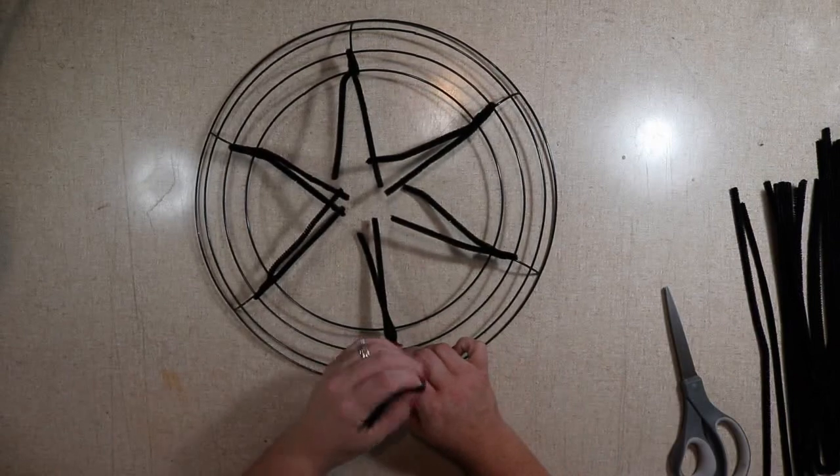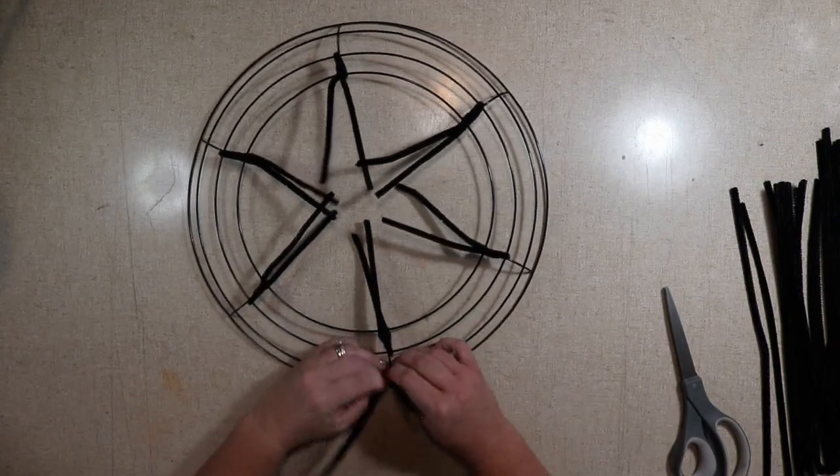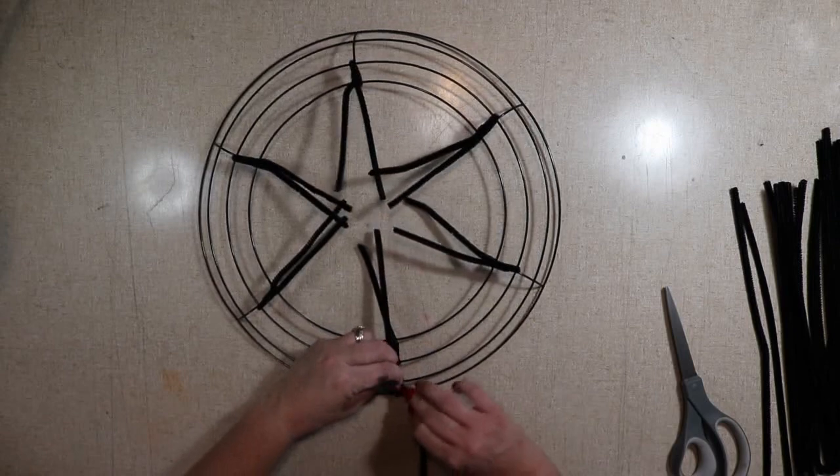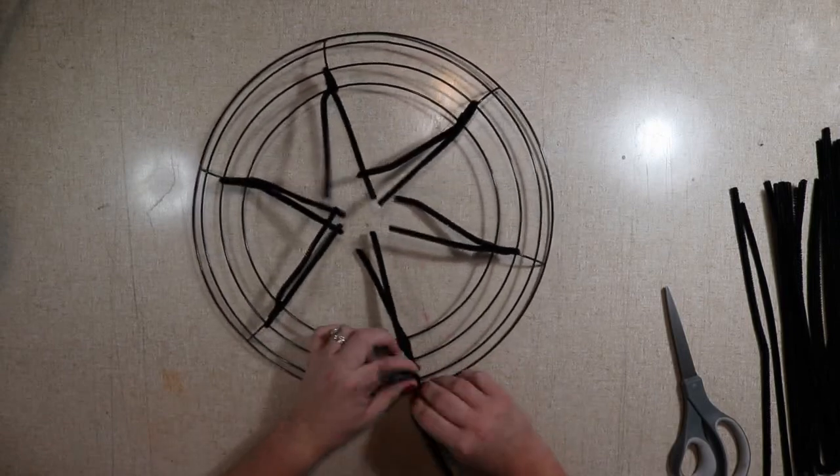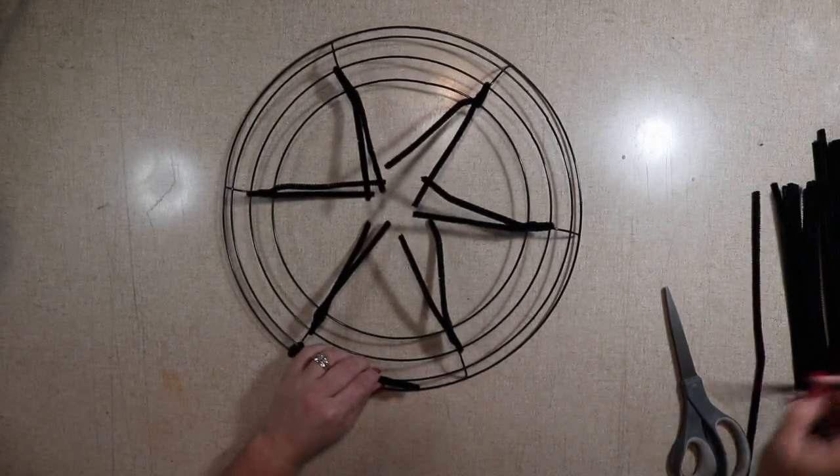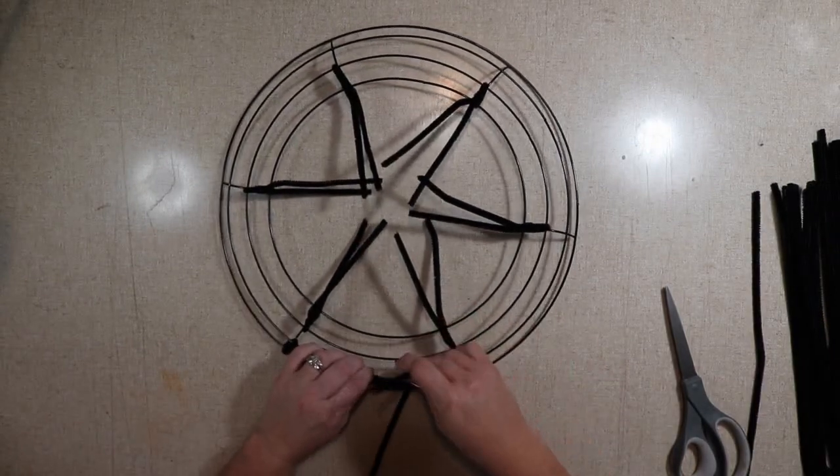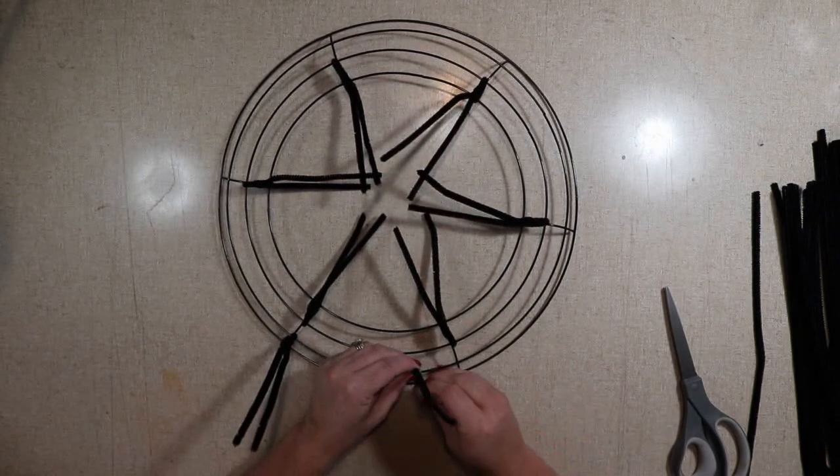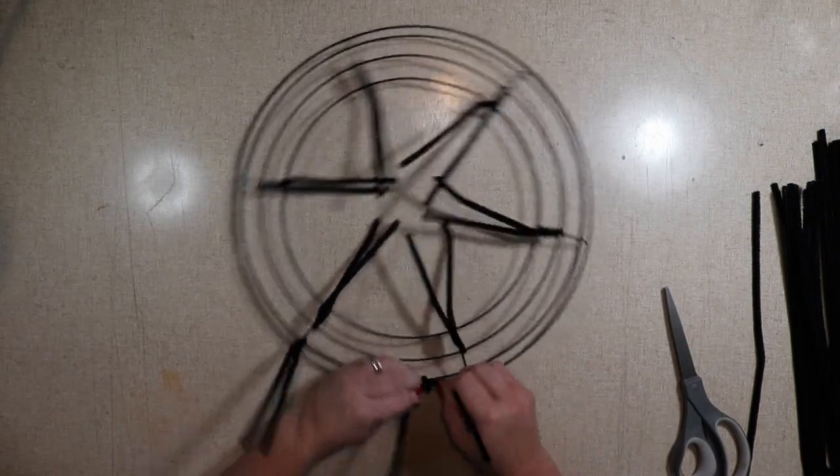So to start the outside section, I'm just going to pick a random crossbar. Again, I'm going over two sections and twisting three times. The difference from the outside and the inside is for the outside, I'm going to lay the pipe cleaners along the frame.